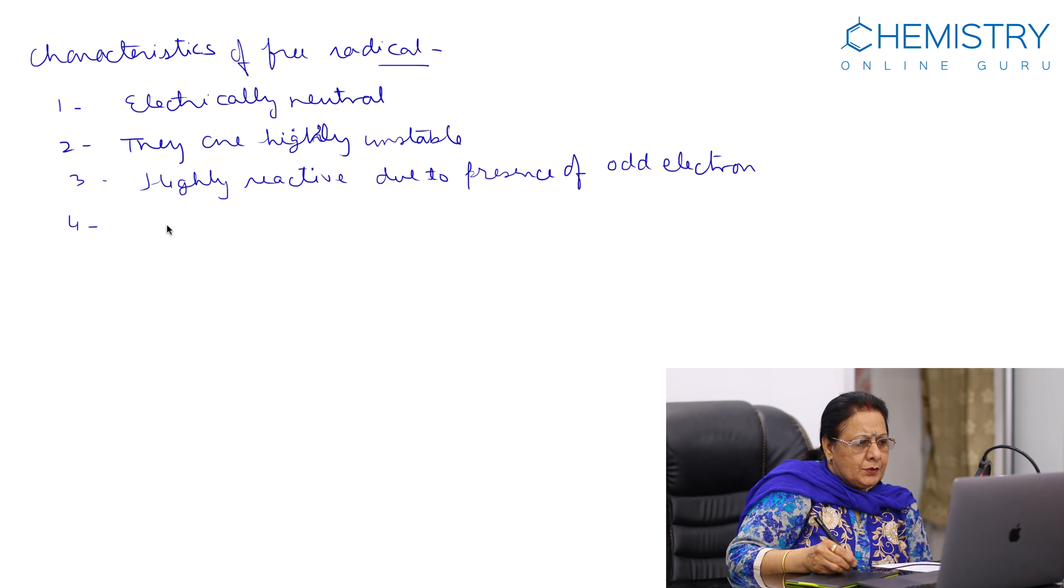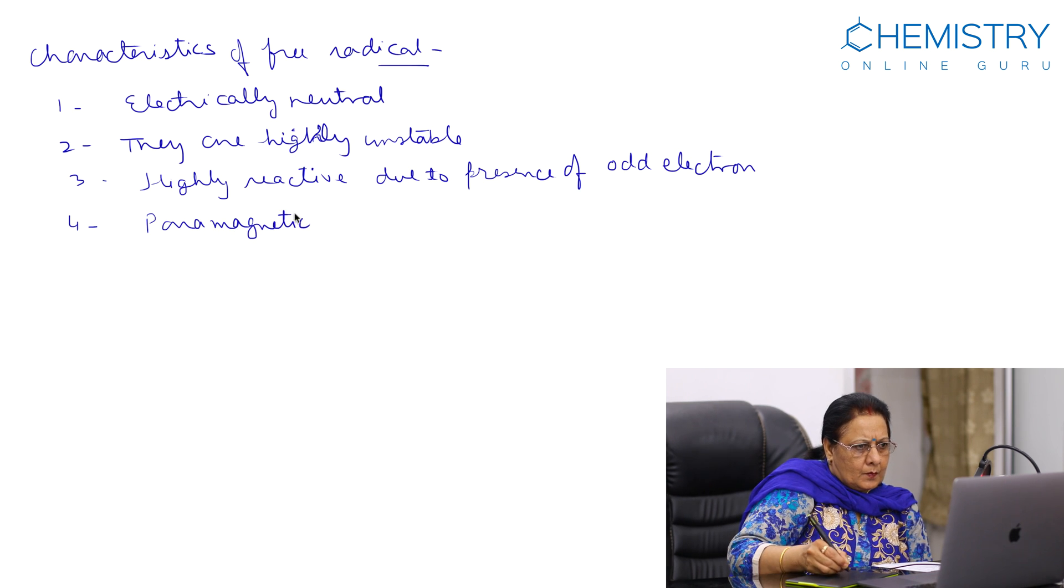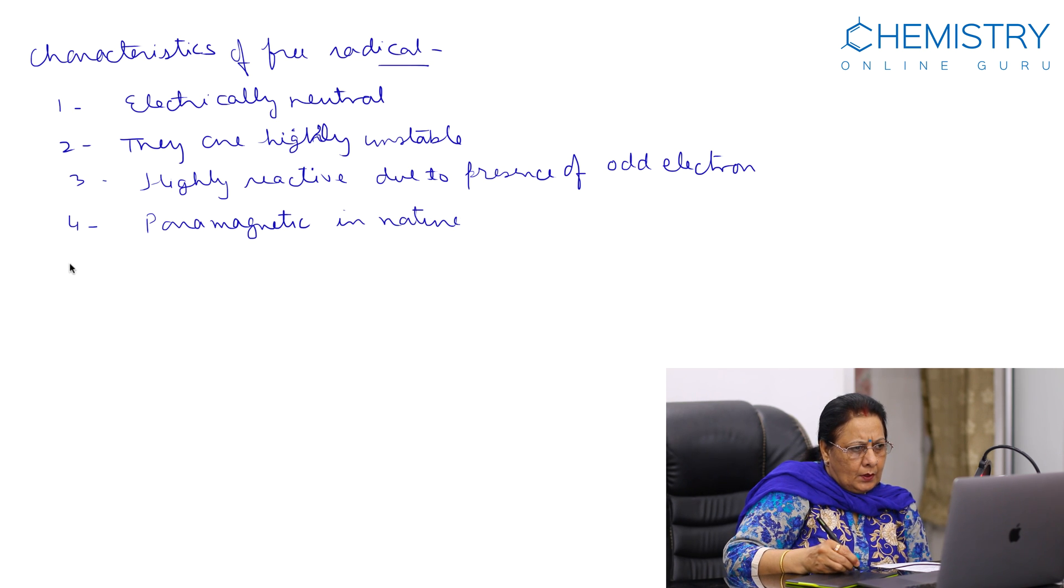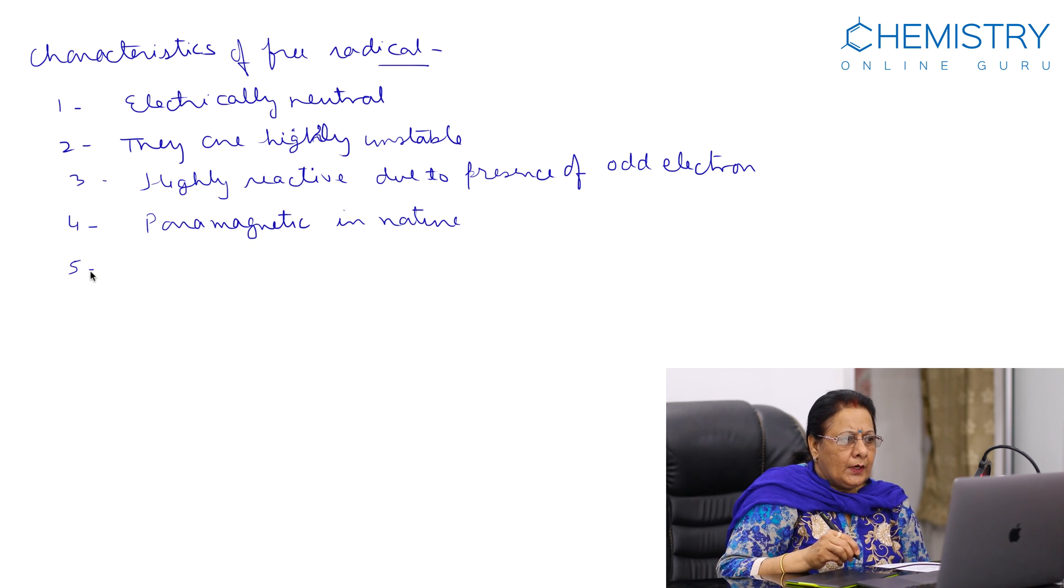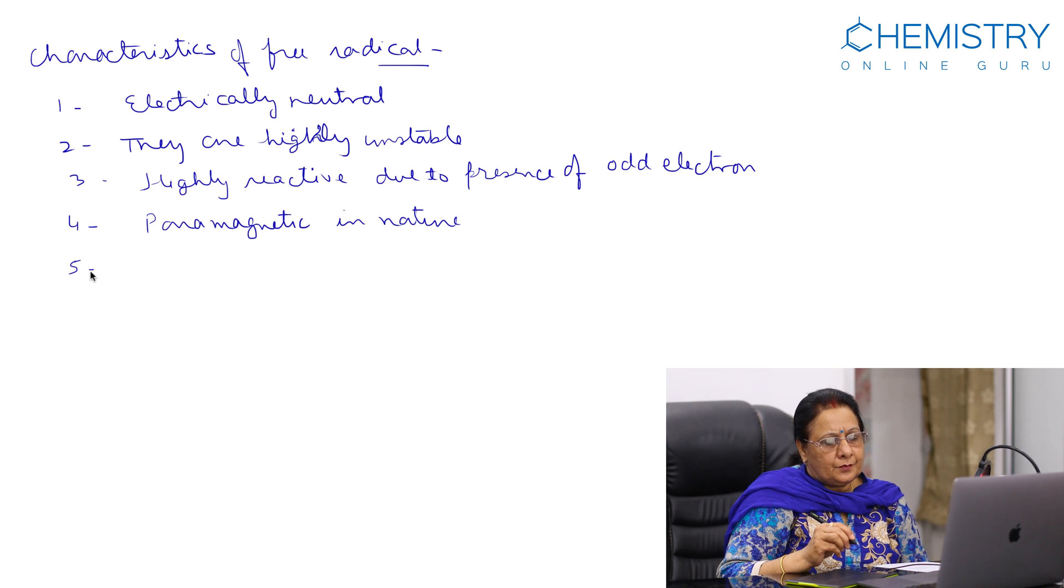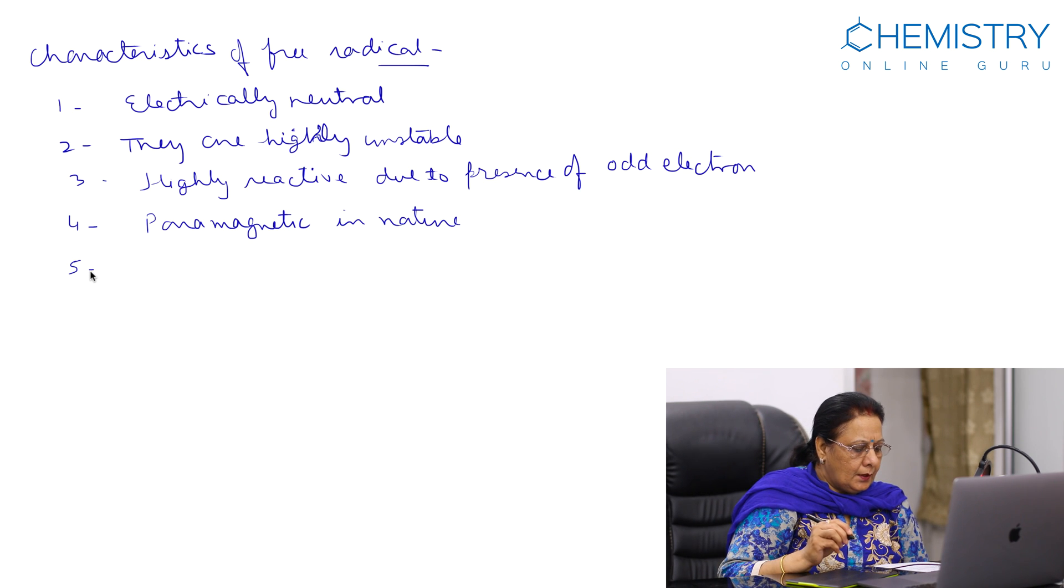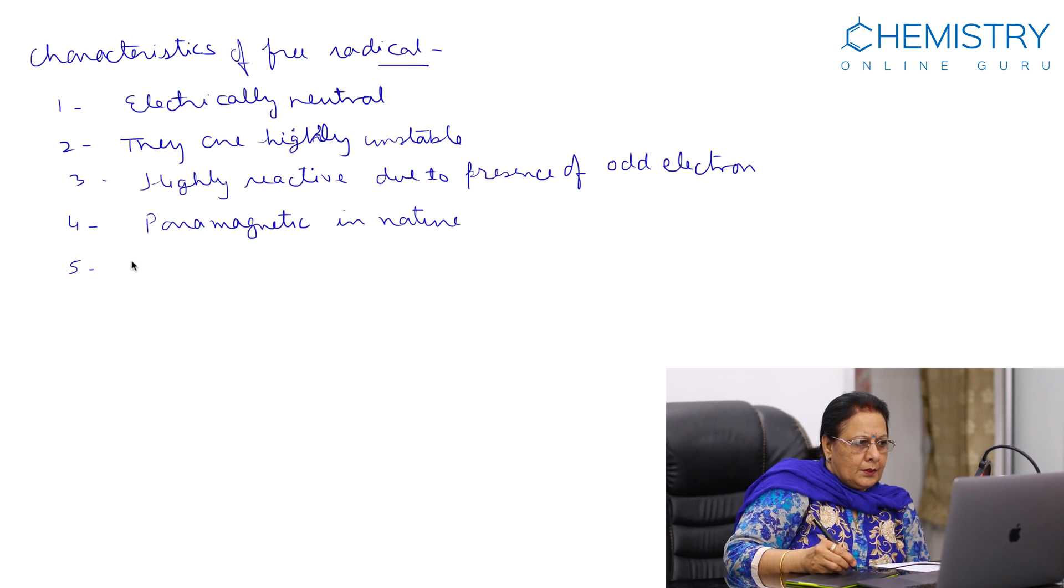Due to presence of unpaired electron, these are paramagnetic in nature. When all electrons are paired, then diamagnetic. Because odd electron is present in free radicals, therefore these are paramagnetic in nature. These are formed in presence of sunlight.